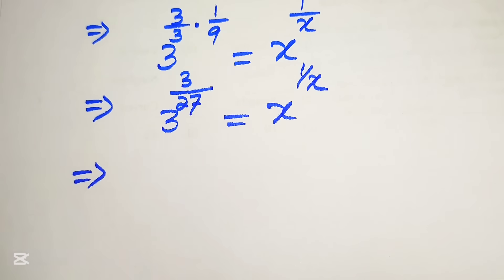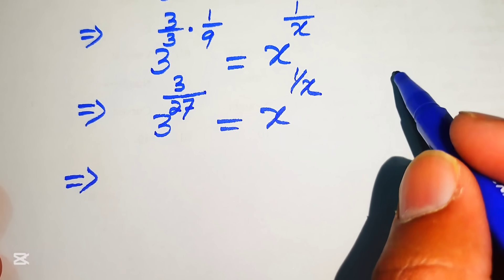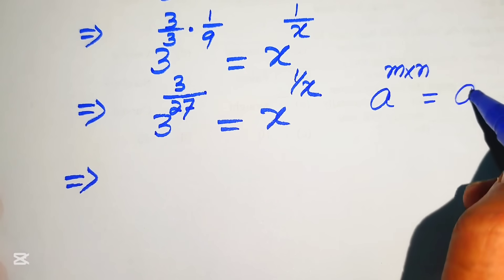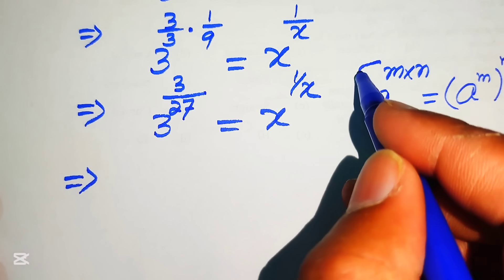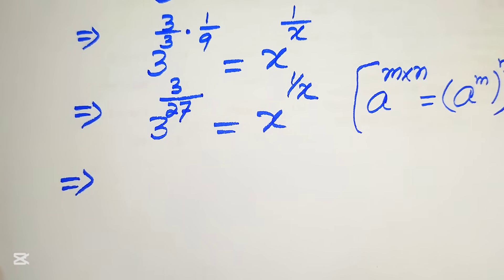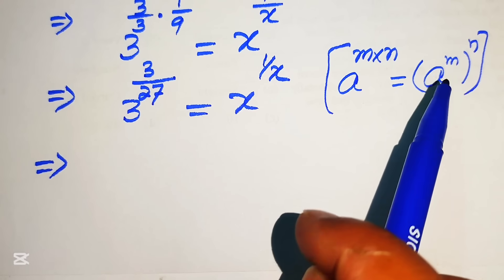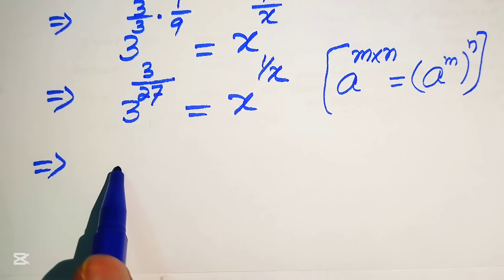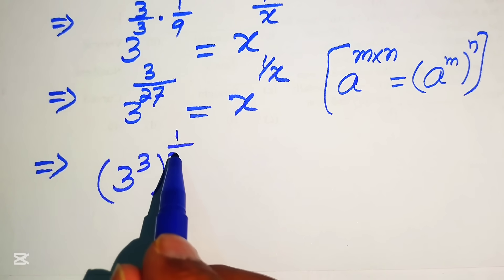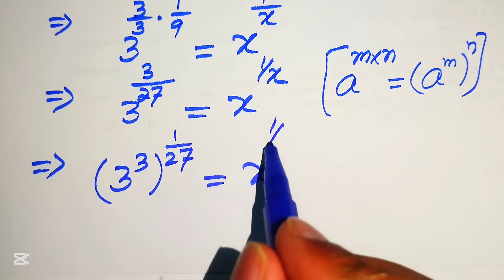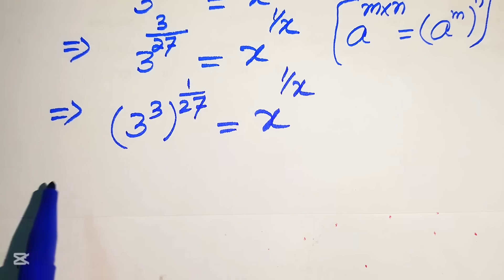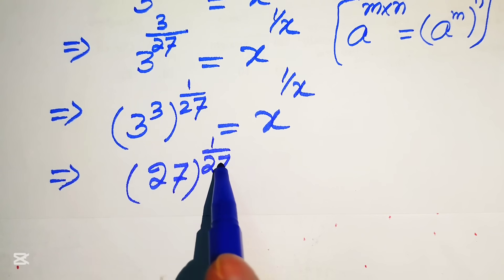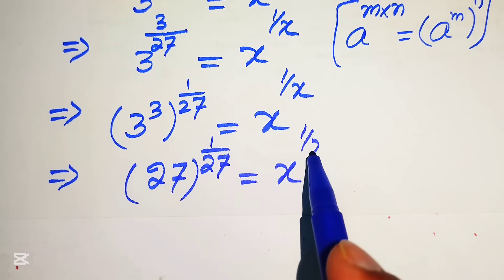We multiply numerator by numerator and denominator by denominator: 3 times 1 is 3, and 3 times 9 is 27, giving 3 to the power of 3 over 27. Then we apply the exponent law in reverse — converting the product form into the exponent-of-exponent form — moving the 3 inside: 3 cubed, whole power 1 over 27, equals x to the power of 1 over x. Since 3 cubed equals 27, this becomes 27 to the power of 1 over 27.